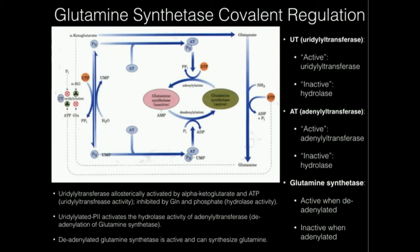If we have a lot of ATP and alpha-ketoglutarate floating around, that's a high energy charge for the cell. We don't need to hold onto all that ATP and alpha-ketoglutarate, so let's put it into another form — let's do biosynthesis. High alpha-ketoglutarate and ATP stimulate the uridylyltransferase, which adds a UMP to P2, which causes the AT complex to act as a hydrolase, removing the AMP group from glutamine synthetase and making it active.